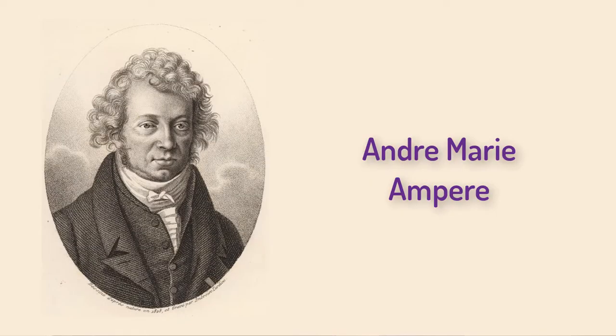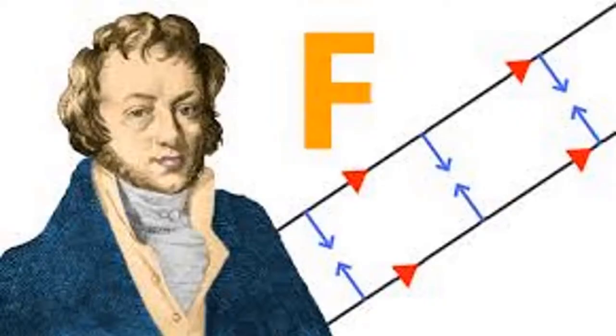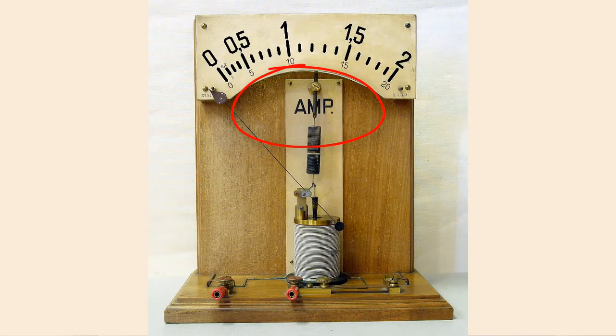In France, a man named Ampere read Ørsted's paper and started to do a series of experiments about electricity and magnetism. For example, Ampere determined that two parallel wires with current in it would feel an attractive force between them. Ampere's experiments were so influential that the current is measured in amps in his honor. One day, Ampere was thinking about Ørsted's theory that current spiraled inside the wire and wondered what would happen if the wire itself was spiraling.